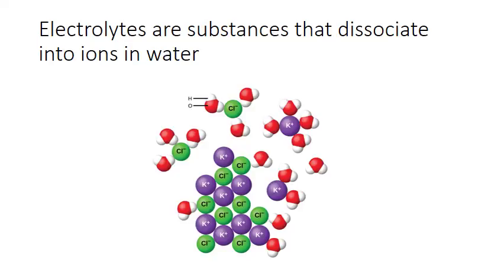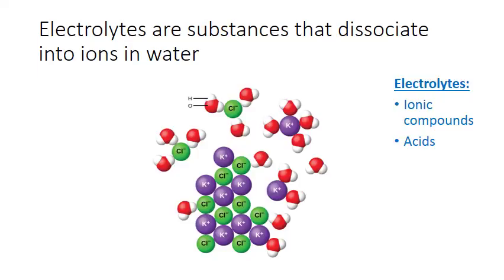Electrolytes are substances that dissociate into ions in water. There are two major classes of compounds that do this: ionic compounds when they dissolve, and acids. Ionic compounds are made up of positively and negatively charged ions held in a crystal lattice in solid form. When put into water, water molecules are attracted to those ions and can work their way around individual ions, separating them from each other. This is how we end up with dissociated, free-floating positive and negative ions in solution.